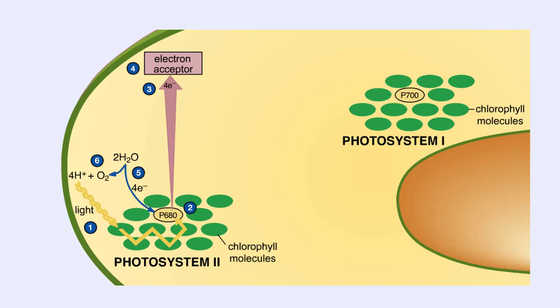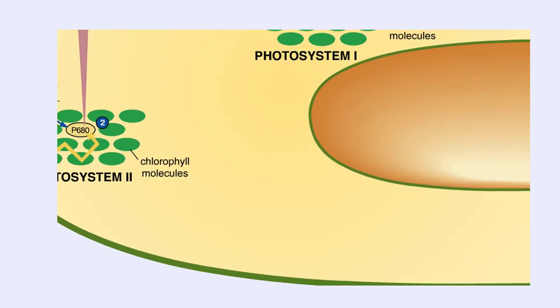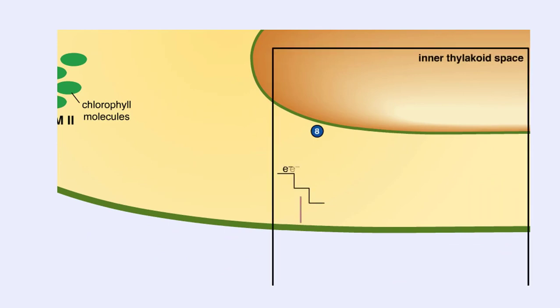The electrons passed from P680 in photosystem II are now transferred to an electron transport chain located within the thylakoid membrane. The flow of electrons through this electron transport chain causes protons to be pumped across the thylakoid membrane into the inner thylakoid space where the protons accumulate.